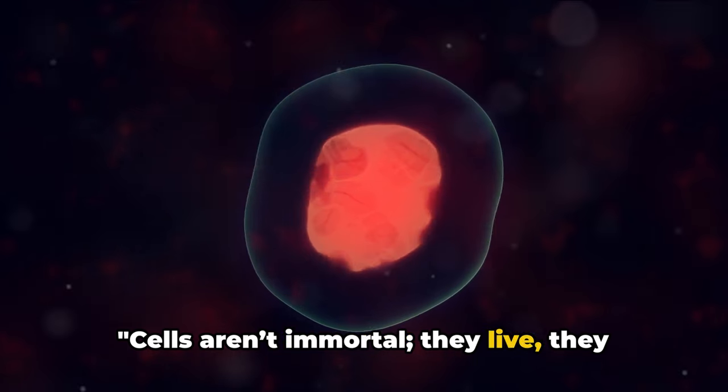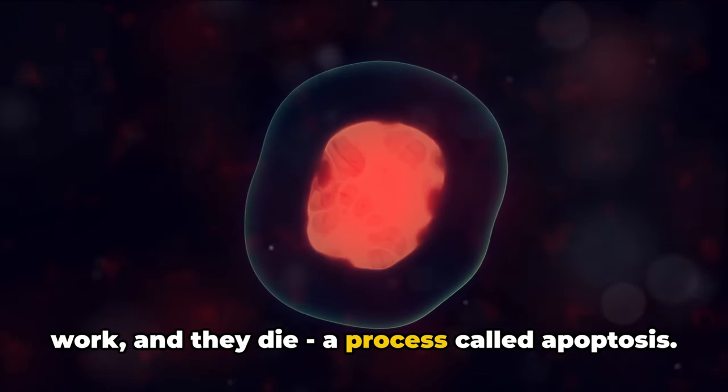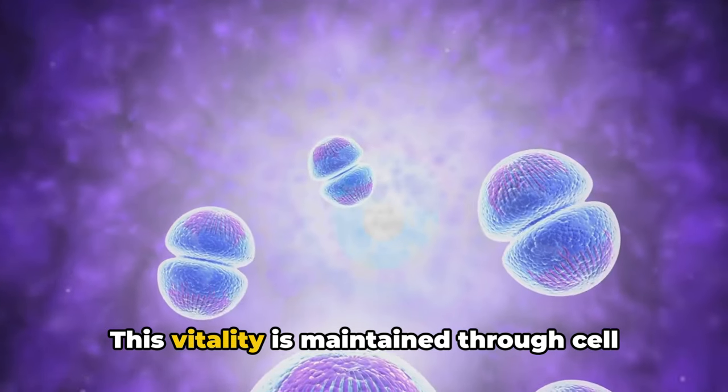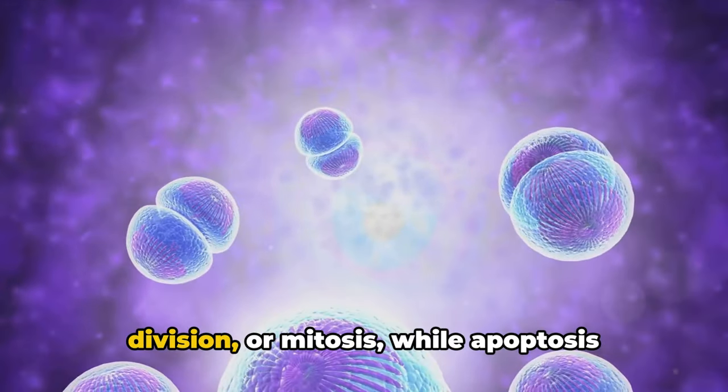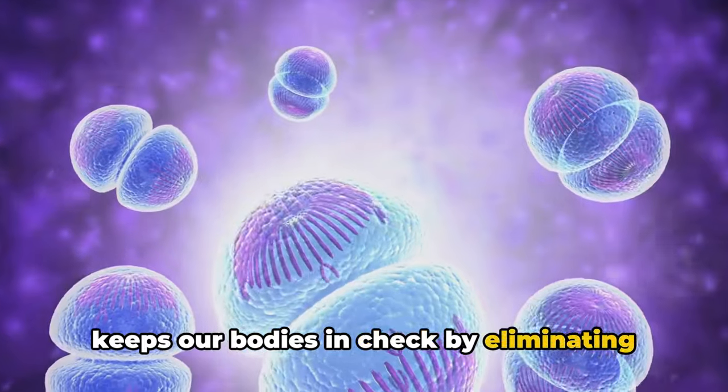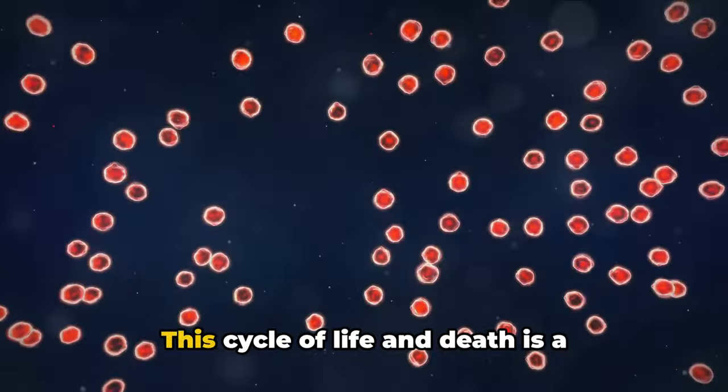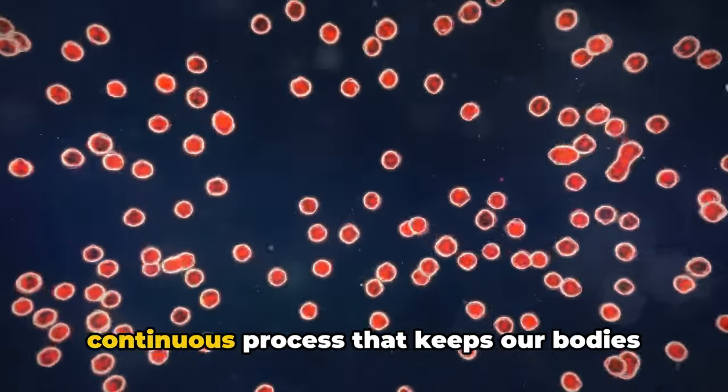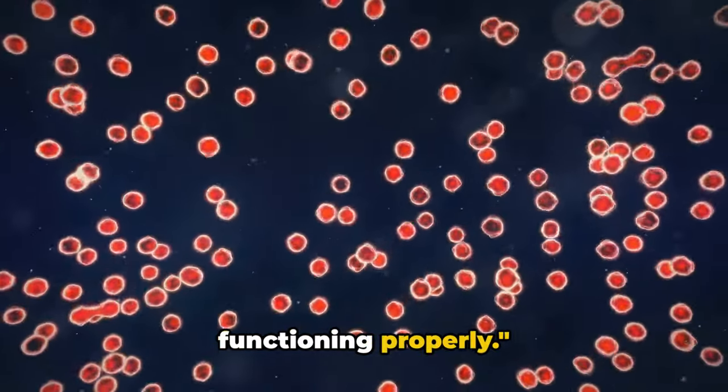Cells aren't immortal. They live, they work, and they die, a process called apoptosis. This vitality is maintained through cell division or mitosis, while apoptosis keeps our bodies in check by eliminating damaged cells. This cycle of life and death is a continuous process that keeps our bodies functioning properly.